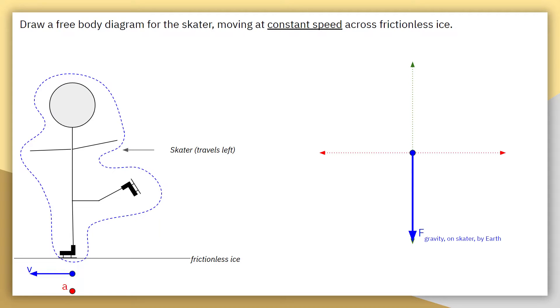So what I would like to know whenever we're constructing a free body diagram is the type of force, if we know it, as well as what two objects constitute that force. Because every single force is an interaction between two objects. So we need to be able to identify what those two objects are going to be. In this case, it's the skater and the earth.